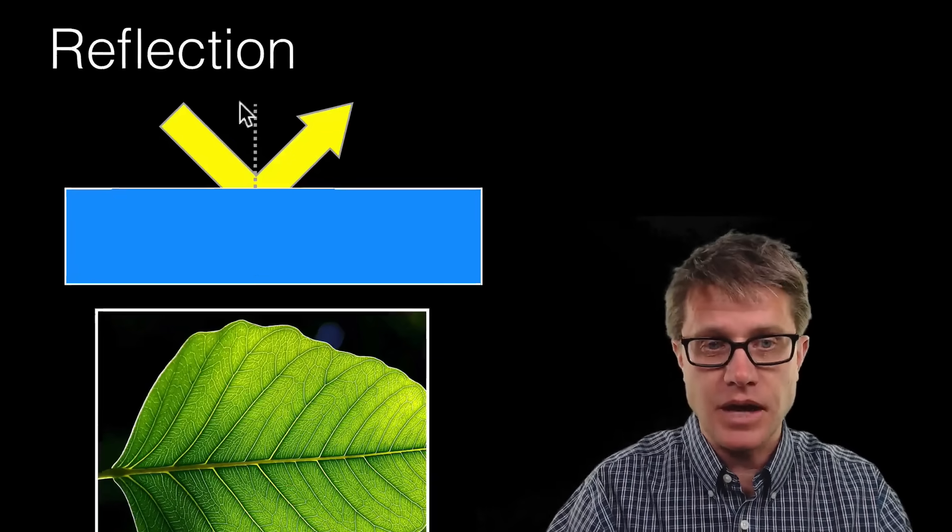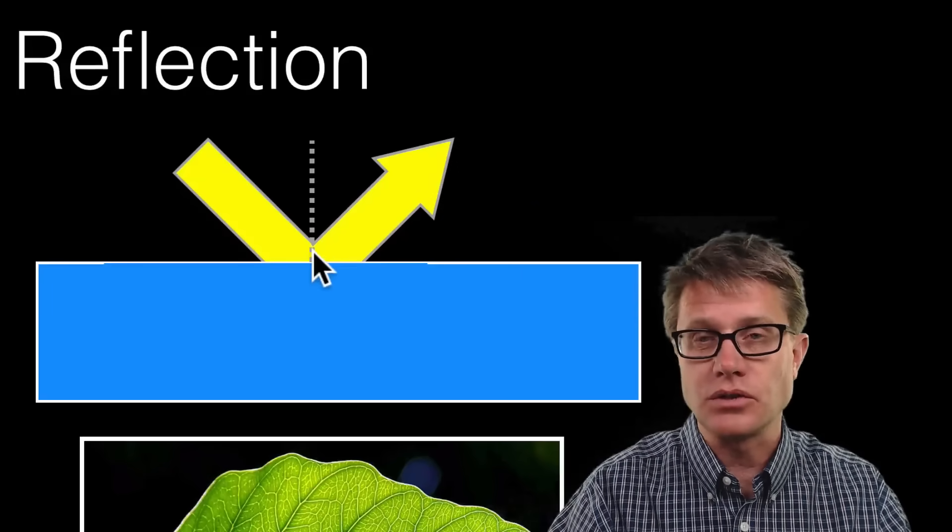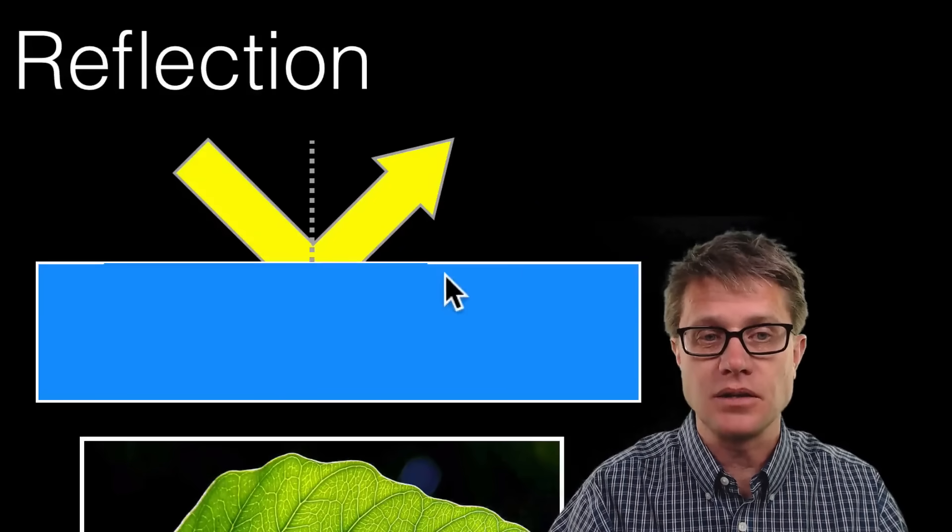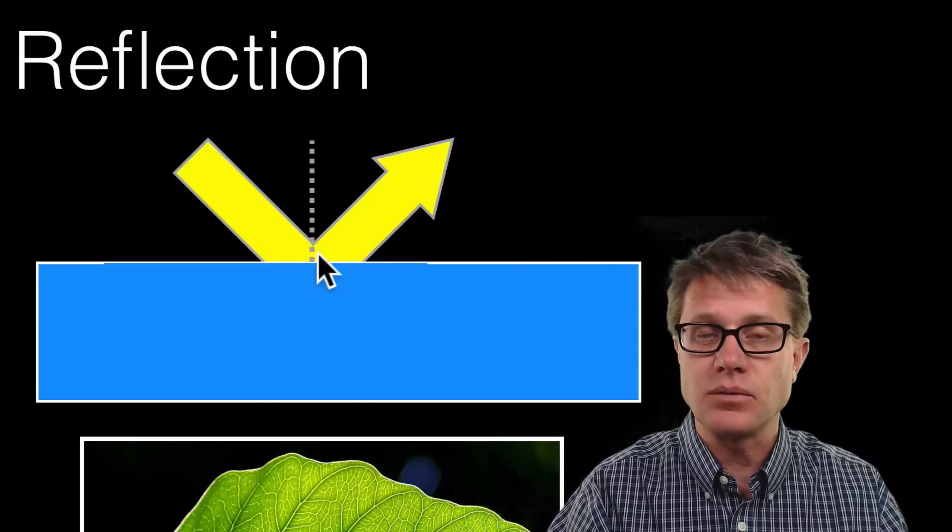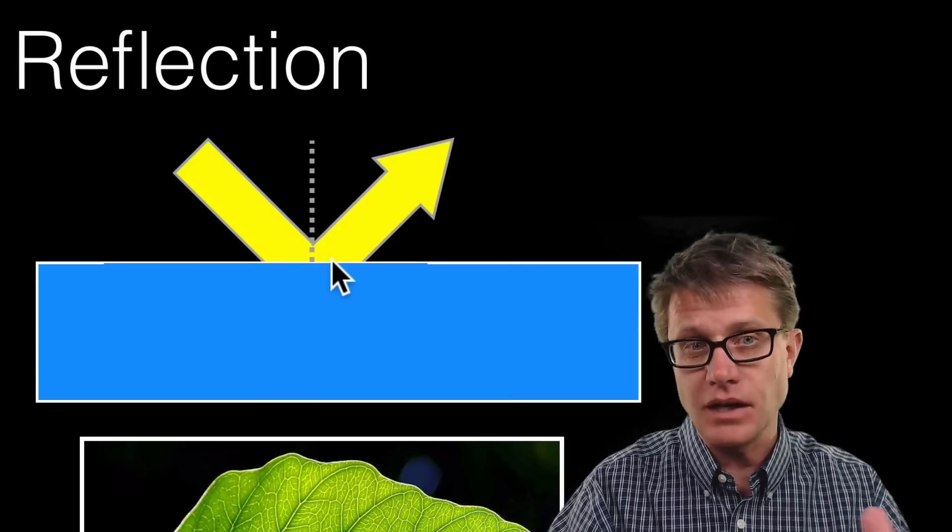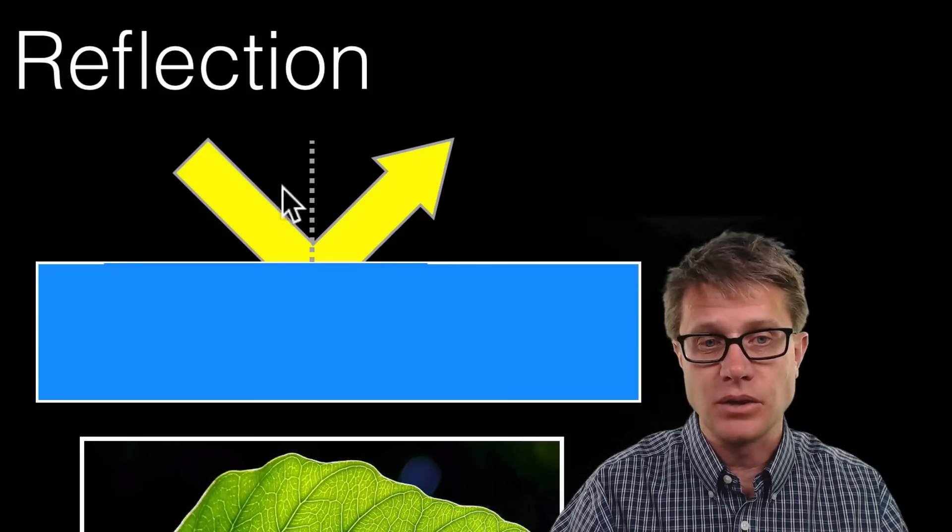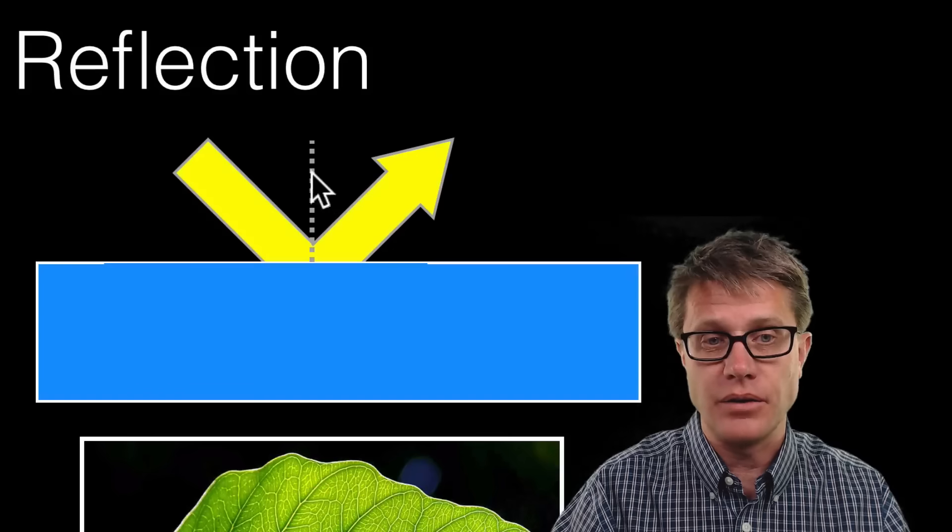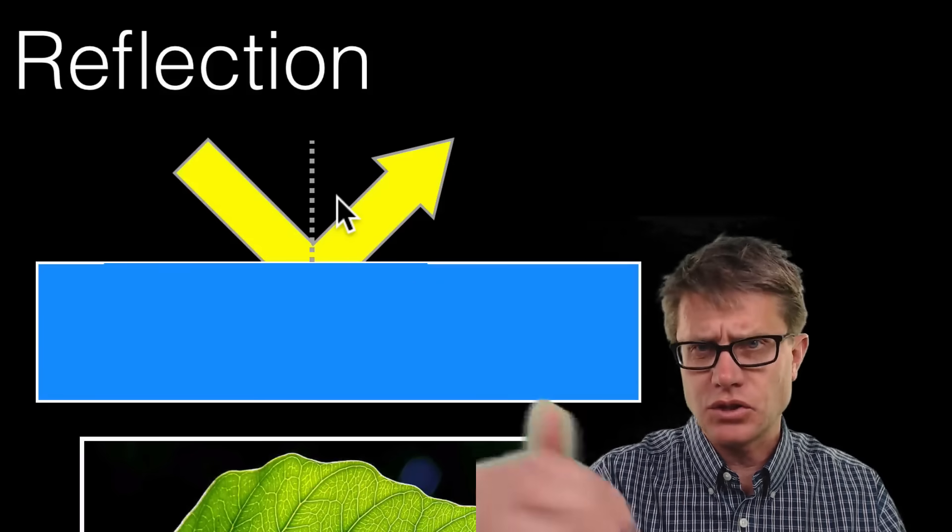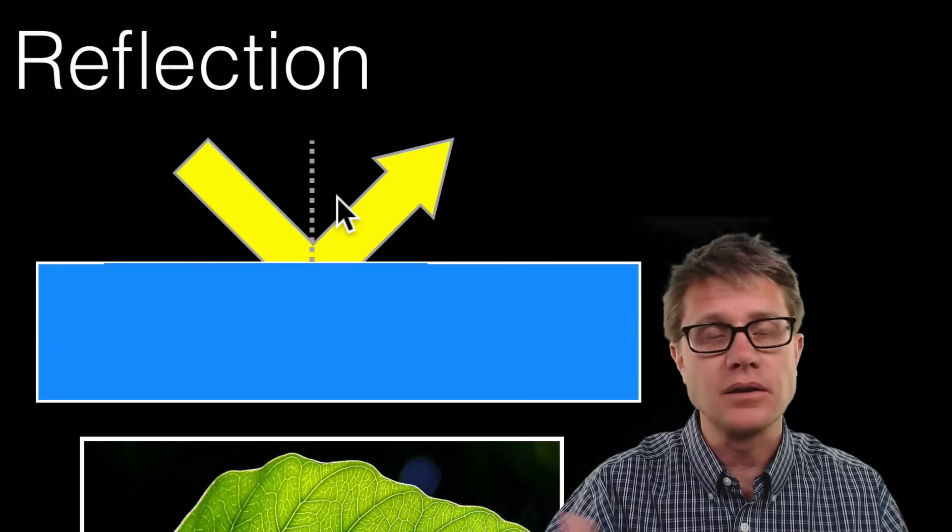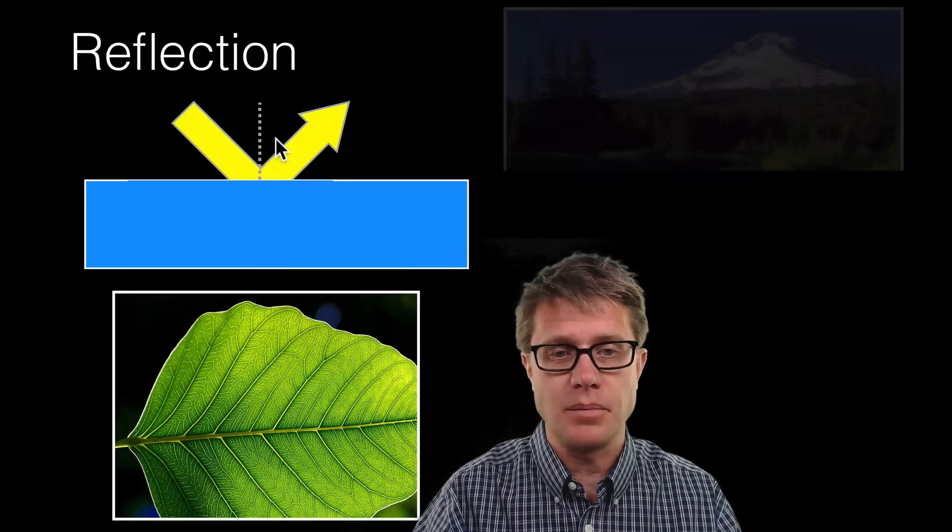Now what's interesting is on that bounce, if you draw a normal, which is going to be a line that is perpendicular to the surface, as light is reflected the angle it comes in at, we call that the angle of incidence, is always going to equal the angle of reflection. In other words, this angle right here is going to equal that angle right there. What if it comes straight in? Then there's an angle of zero and so it's going to bounce straight back.